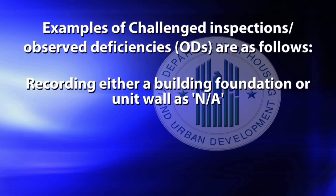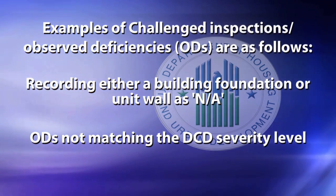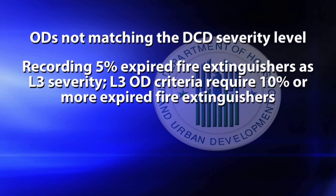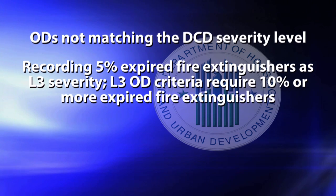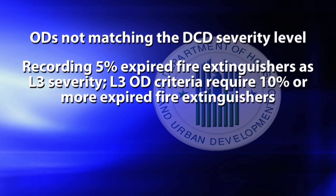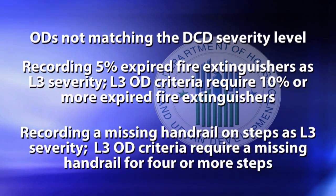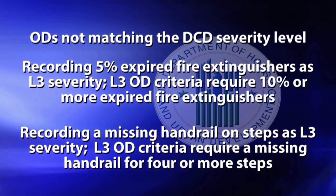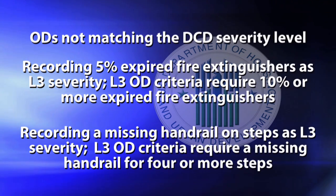Recording either a building foundation or unit wall as not actionable. Observed deficiencies not matching to DCD severity level, such as recording 5% expired fire extinguisher signatures as level 3 severity — level 3 observed deficiency criteria requires 10% or more expired fire extinguisher signatures. Recording a missing handrail on steps as level 3 severity — level 3 observed deficiency criteria requires a missing handrail for 4 or more steps.